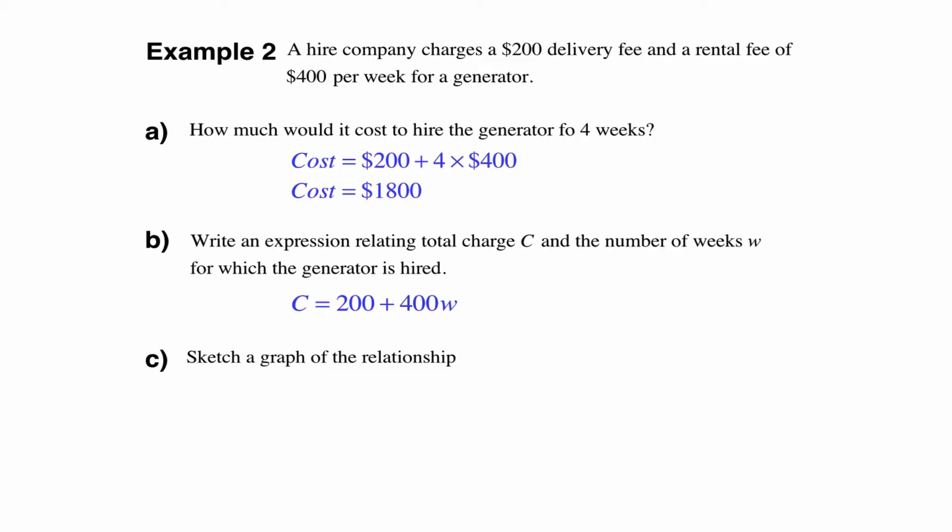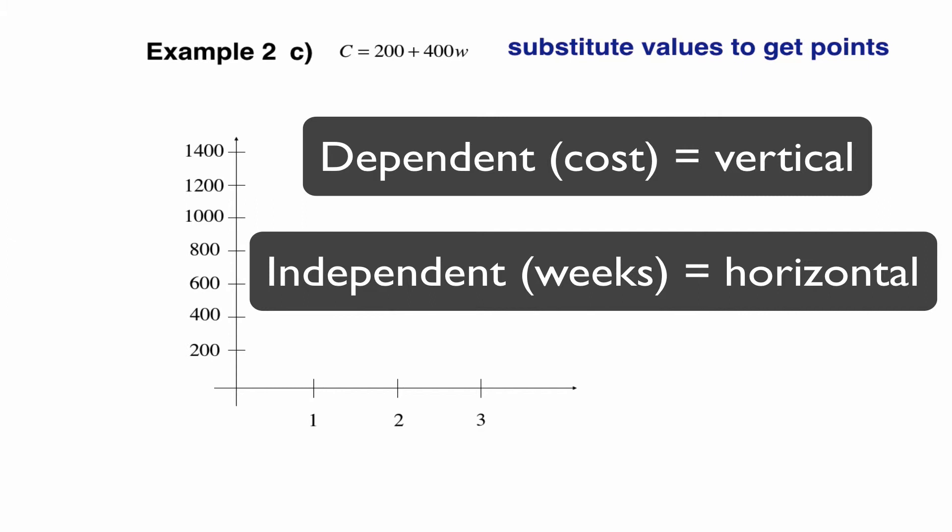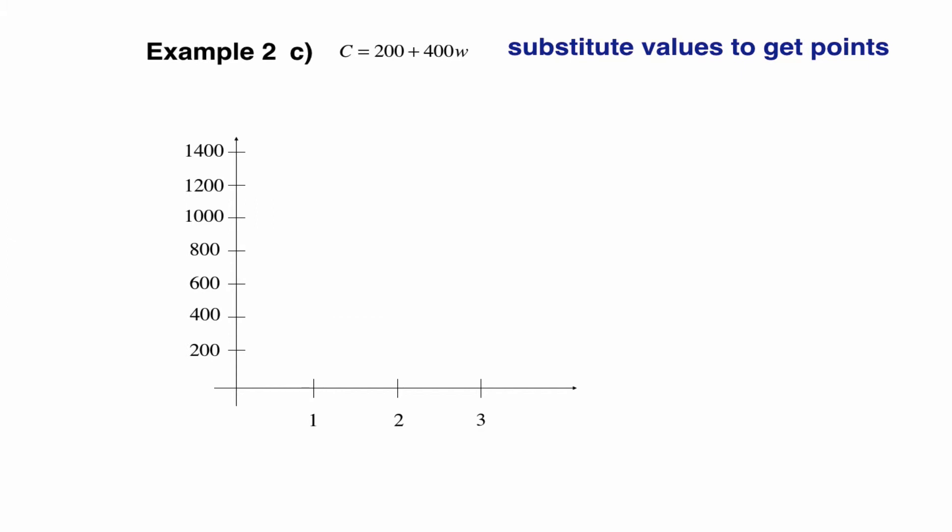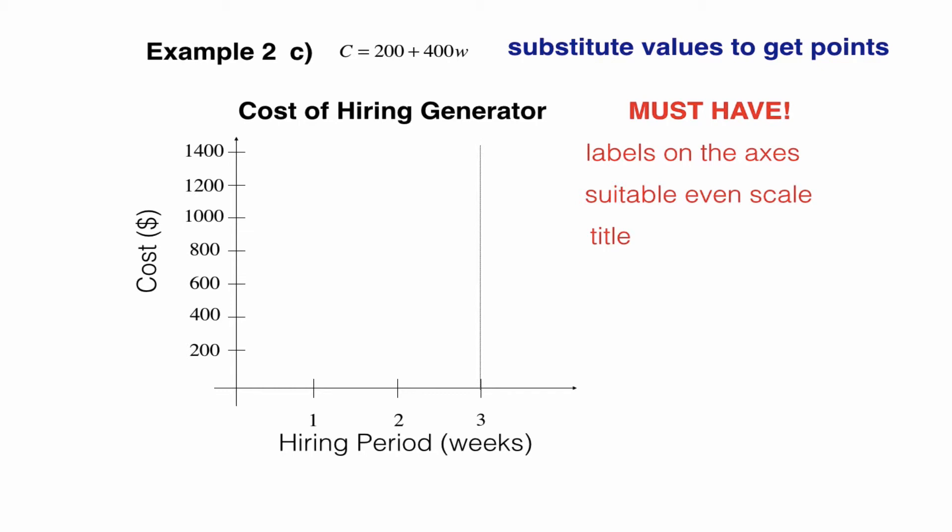And the last part asks us to sketch a graph of that relationship. So we've got our relationship C equals $200 plus $400W, we need to substitute suitable values to get points we can plot onto a graph. So we need to have our scale and our axes for where we're going to draw our graph. So we need to determine which is our dependent variable and which is our independent. And we already decided that the cost, total cost is the dependent variable, and that goes on the vertical axis and the independent variable goes along the horizontal axis. Often in the HSC, you'll actually be given the axes to draw, but not always. You must ensure that you have labels on your x-axis, a suitable even scale, it can be different for both the axes, but it must be the same on each axis, and a title.